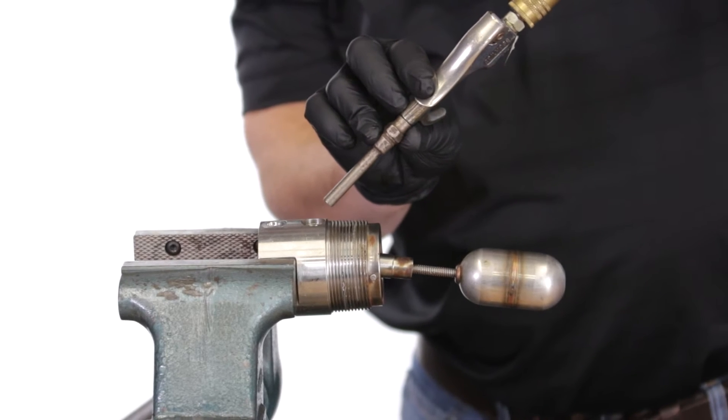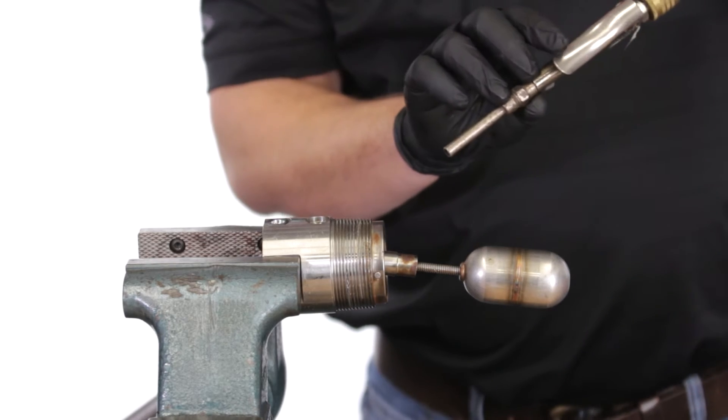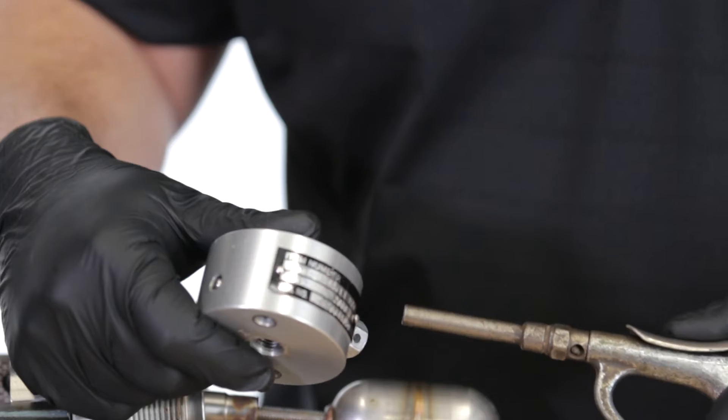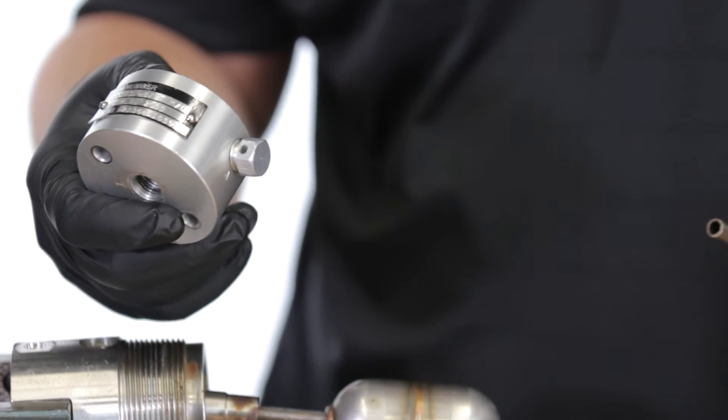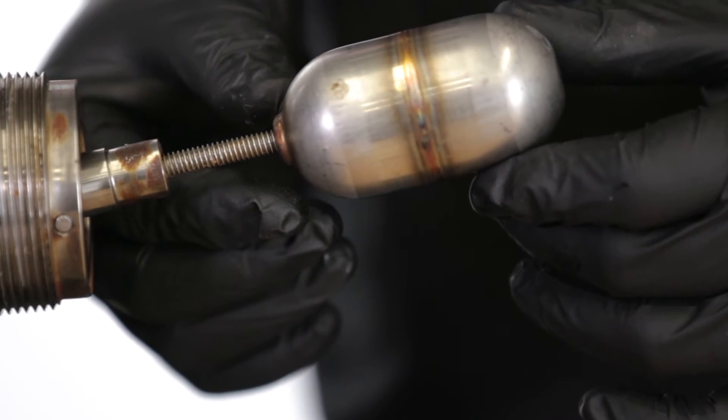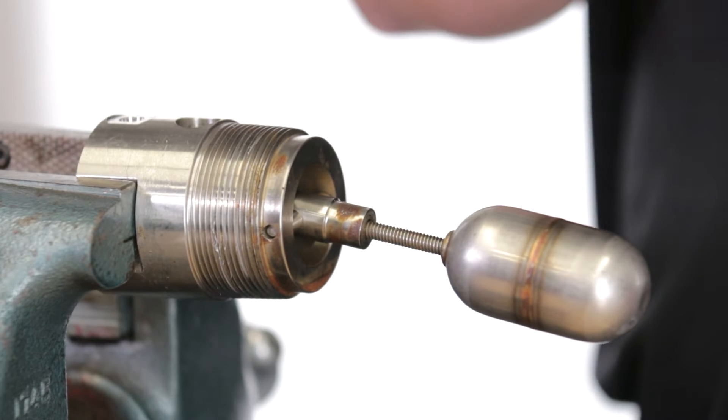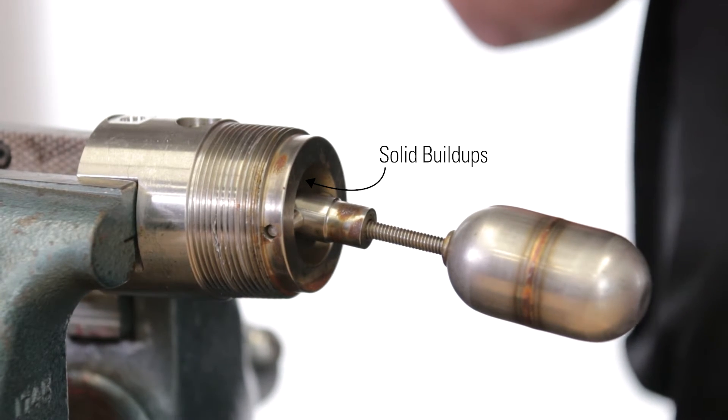With the level switch disassembled, next inspect and clean each component with compressed air to make sure the body is free from contaminants. If you use brake cleaner, wipe it clean before assembly. Clear the vent plugs of any debris. Inspect the float for any punctures or damage. You may need to inspect the float lever more closely or clean any solid buildup inside the level switch.